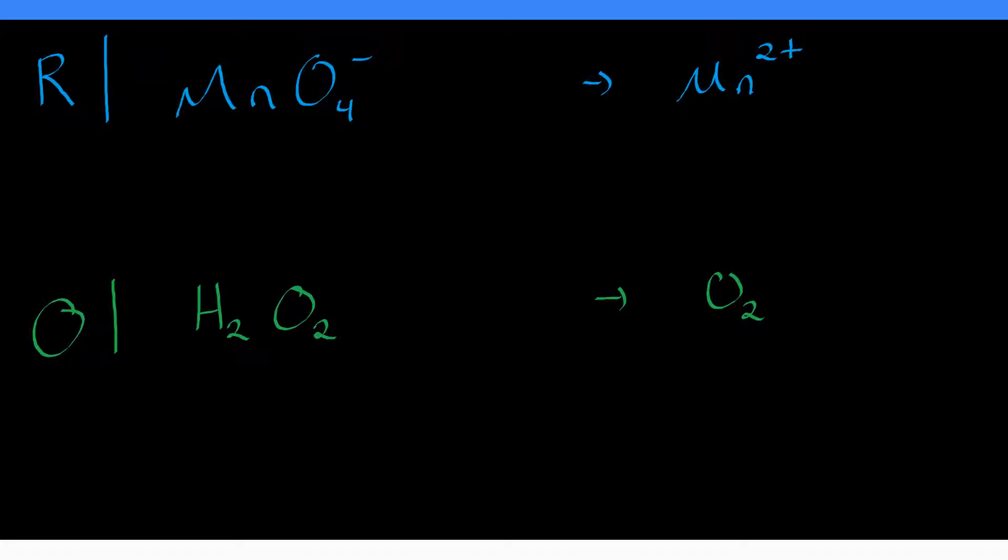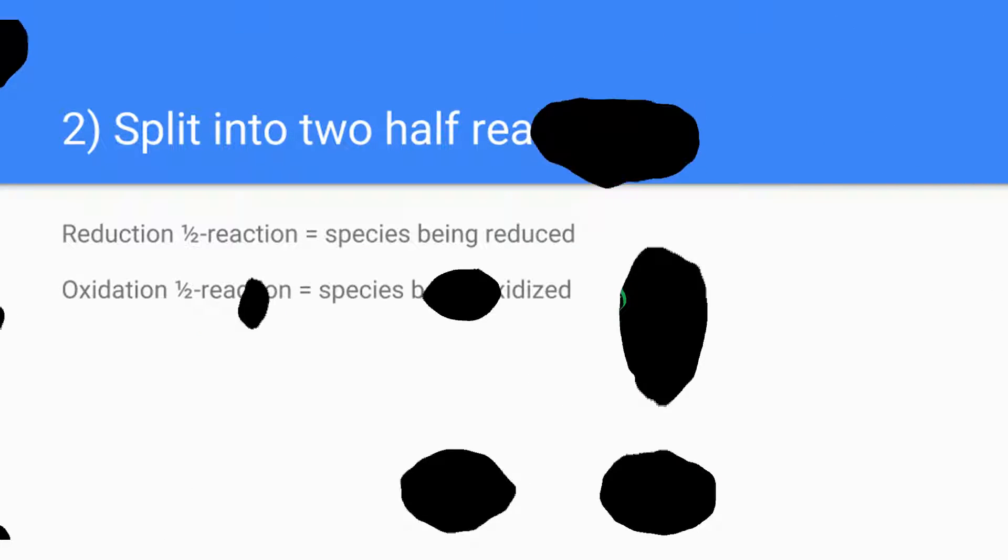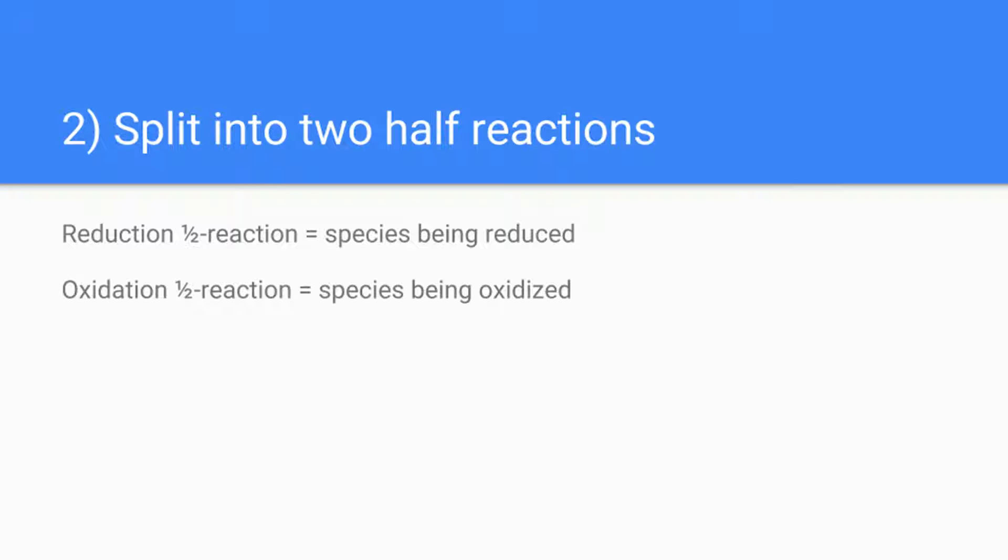Step two: after you have identified the reduced and oxidized species, you split your reaction into half-reactions — your reduction half-reaction and your oxidation half-reaction. The reduction half-reaction, shown in blue up top, is permanganate going to manganese 2+. The oxidation half-reaction, in green down bottom, is peroxide making oxygen. Even though these two things don't exist in isolation, you can think of it like a reaction mechanism — you're temporarily splitting it into half-reactions, and as we move forward you'll see why.